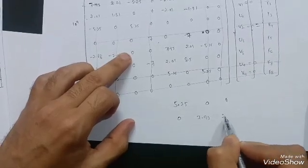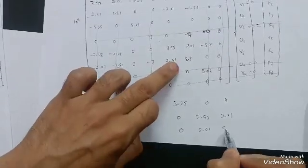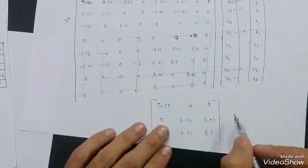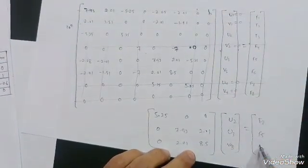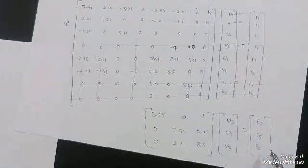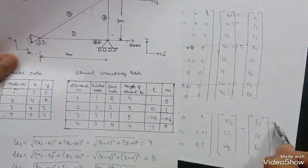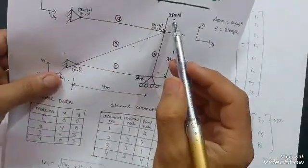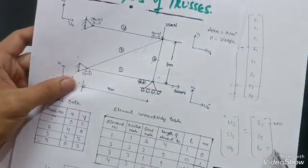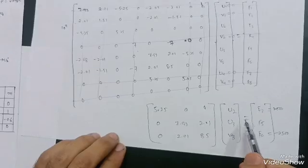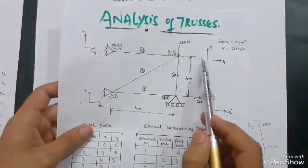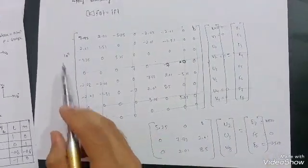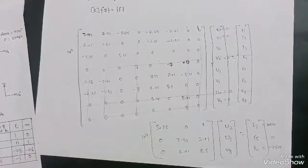The remaining 3×3 matrix has values: 5.25, 0, 0 in the first row; 0, 7.93, 2.01 in the second row; and 0, 2.01, 8.5 in the third row. The unknowns are u2, u3, v3, and the forces are F3, F5, F6. F3 = 2000, F6 = −2500 (downward), and F5 = 0. A factor of 10⁹ applies on the stiffness side.